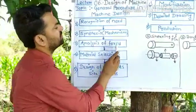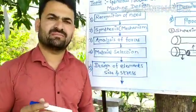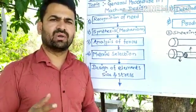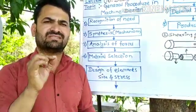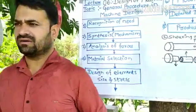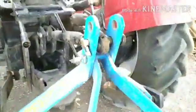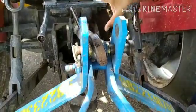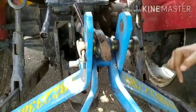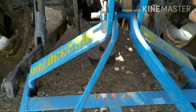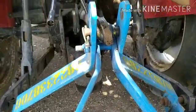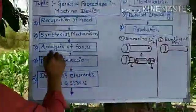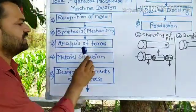The third step is analysis of forces. The designer must know different types of forces — steady load, dead load, variable load, and impact load. In our example, when the tractor is moving in the forward direction, the load coming on the pin is a steady tensile load. So the designer identifies that there is a steady tensile load acting on this pin, and the third step is complete.